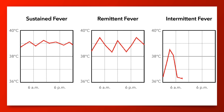With intermittent fevers, the body temperature returns to normal at least once daily. This pattern of fever may signal a pyogenic infection, such as abdominal abscess, and has been described with tuberculosis and lymphoma. Fevers that show a large variation between the peak and nadir, or high fevers with a rapid rate of defervescence, may also be referred to as hectic or spiking fevers. This fever pattern can occur with bacteremia.